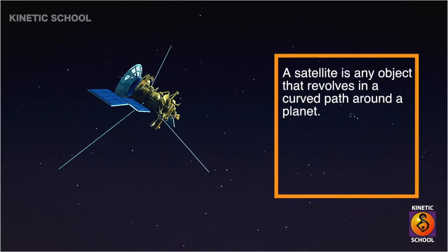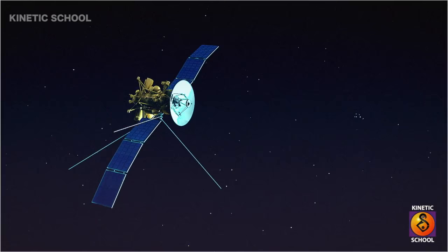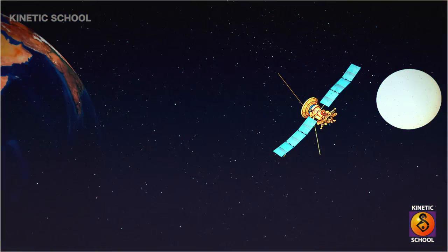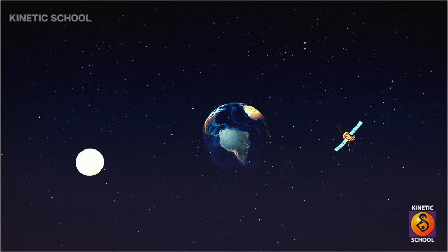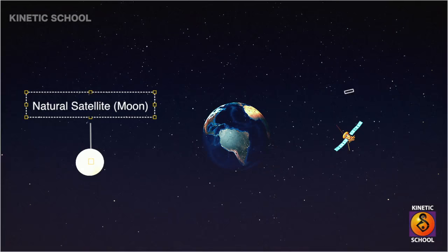A satellite is any object that revolves in a curved path around a planet. There are two major types of categorization when it comes to satellites. One is natural satellite, and the other is artificial satellite.